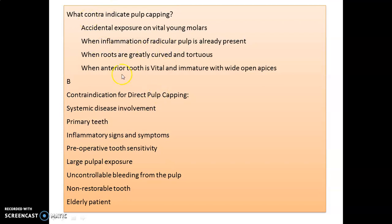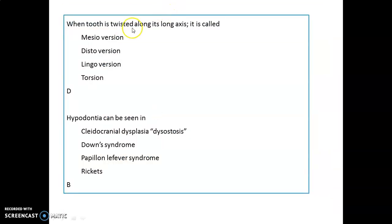What contraindicates pulp capping? Inflammation of the radicular pulp is a contraindication. Contraindications for direct pulp capping (DPC) include: systemic disease involvement, primary teeth — though with new materials like Biodentine and MTA, DPC in primary teeth is now possible — inflammatory signs and symptoms, preoperative tooth sensitivity, larger pulp exposure, uncontrolled bleeding from the pulp, non-restorable tooth, and elderly patients.